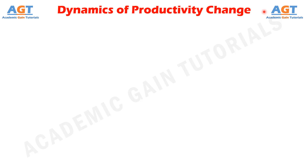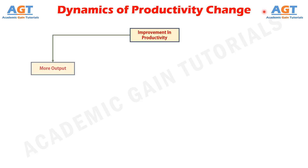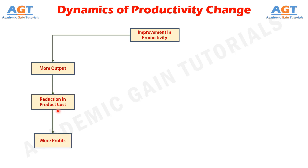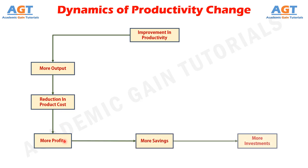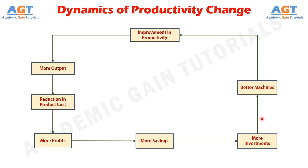Productivity improvement results in a lower cost per unit by effective utilization of all the resources and reducing wastage. Lower cost per unit contributes to increased profit levels so that the company can reinvest the surplus in new technology, equipment, and machines.